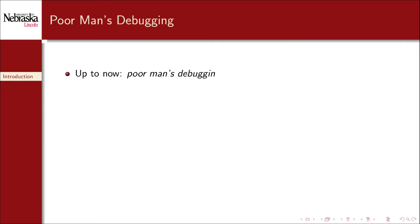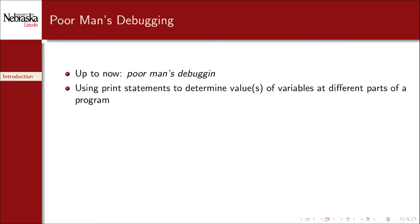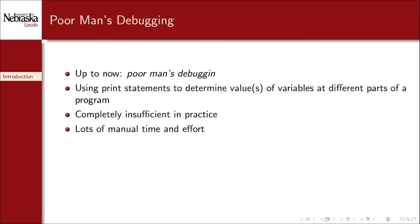Up to now you've probably been using a poor man's debugging strategy — that is, you've been using print statements to determine the values of a variable at different points in a program. However, in practice this is completely insufficient as you might have already experienced. It requires a lot of manual time and effort to write and to remove a bunch of print statements. It also does not create any reproducible tests or artifacts like writing unit tests does. This is more of an ad hoc strategy for testing. If anything breaks in the future, the process will have to be repeated again to diagnose the problem.